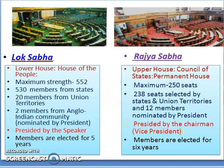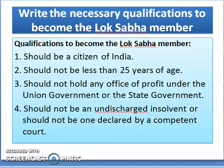Rajya Sabha is also called the upper house, or the council of states, or the permanent house. The maximum strength of the Rajya Sabha is 250 seats, out of which 238 seats are selected by the states and Union territories, and 12 members are nominated by the President of India. The Rajya Sabha is presided by the Chairman, who is the Vice President of India, and members are selected for 6 years.